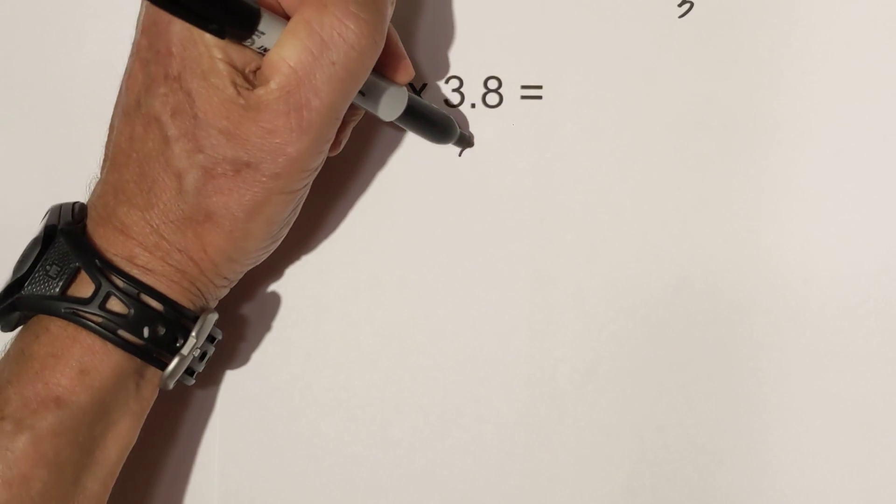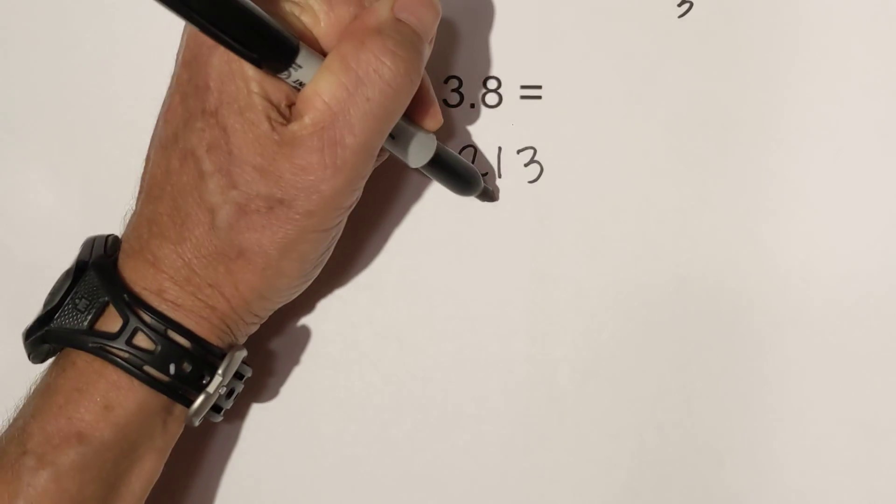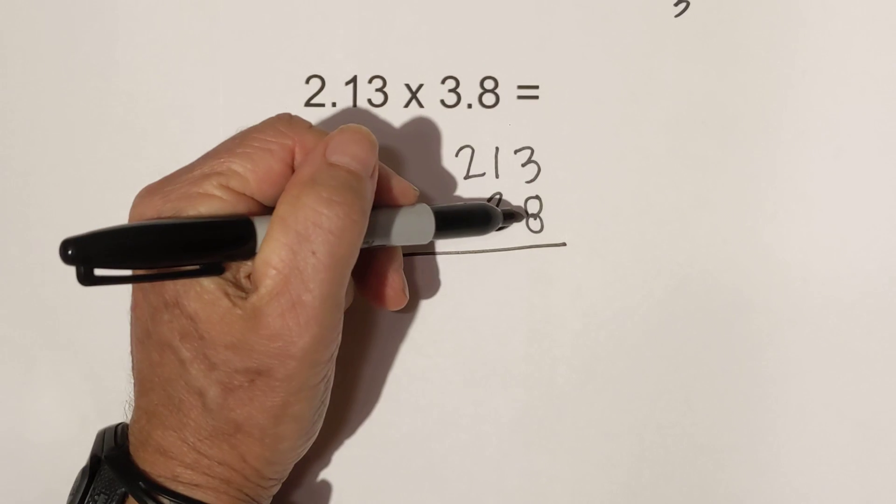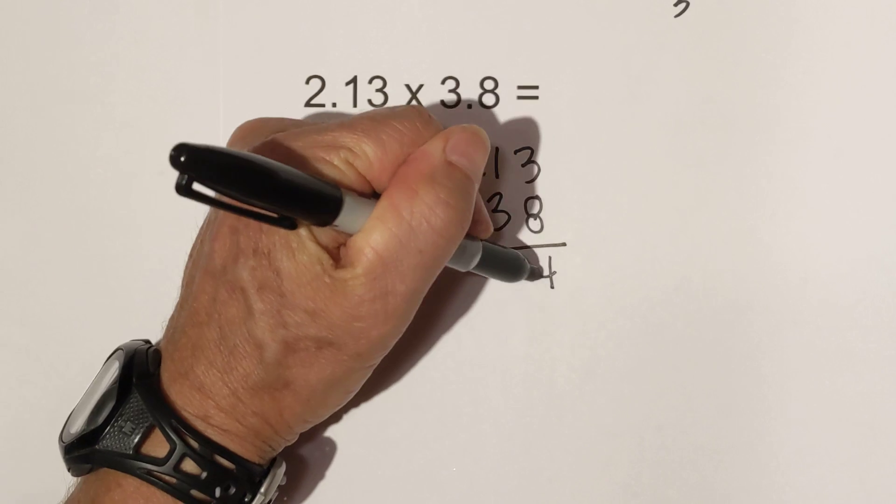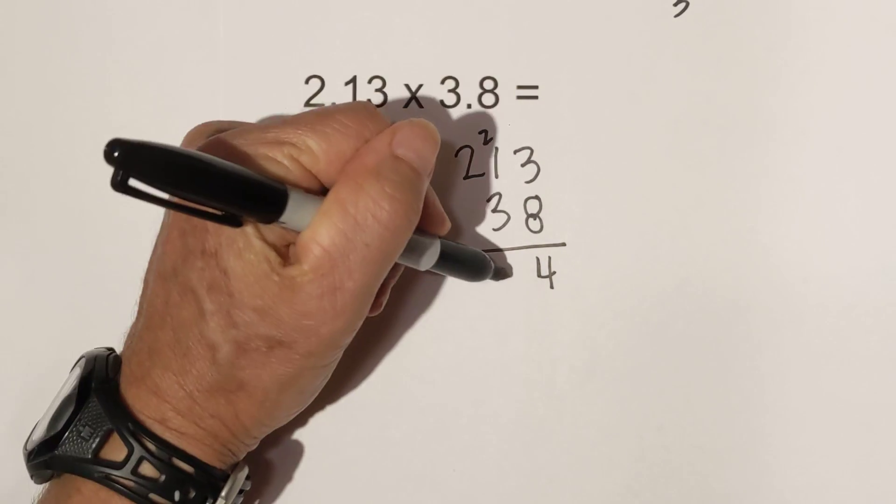Okay, 213 times 38. 8 times 3 is 24 carry the 2, 8 times 1 is 8. So that will be 10 when you add the 2 and then that is 16 plus 1 from the 10 here. So that is 17.